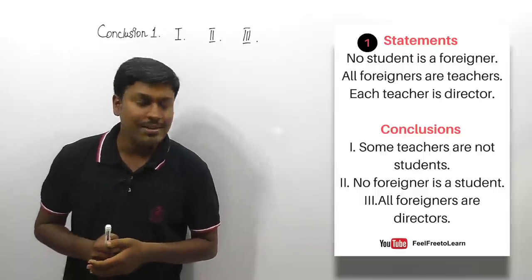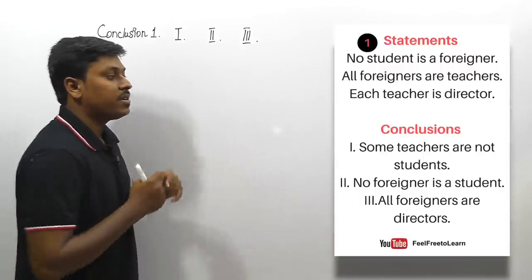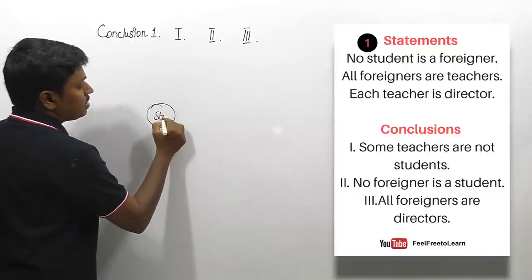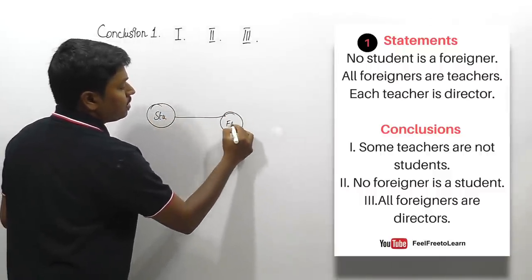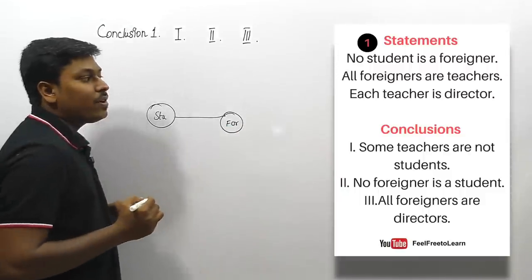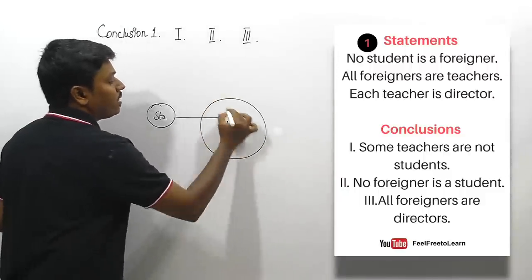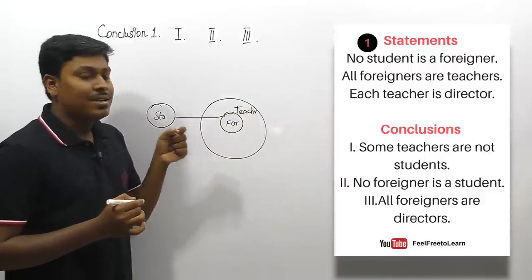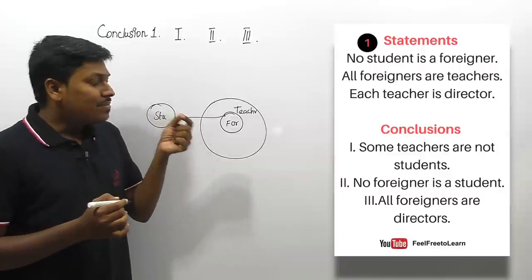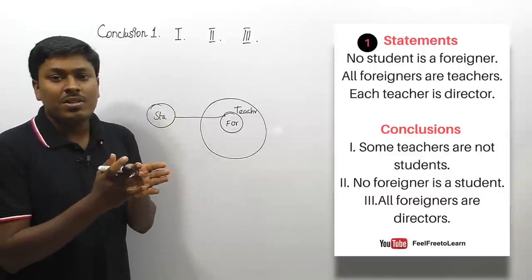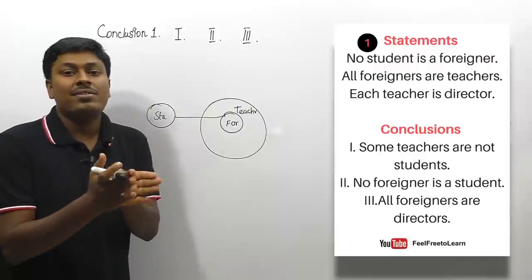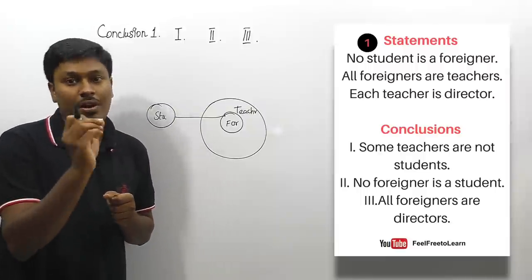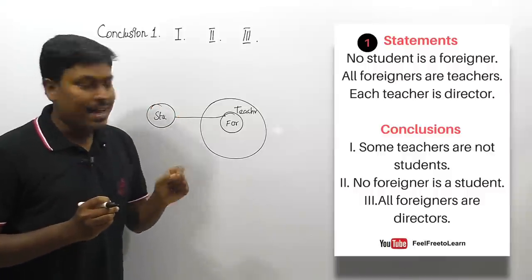Let me move on to the best 20 syllogism questions. Question number one: the first statement is 'no student is a foreigner,' the second statement is 'all foreigners are teachers,' and the third statement is 'each teacher is a director.' The word 'each' denotes 'all' — each and every student studying mathematics, each and every student playing hockey — so all teachers are directors.